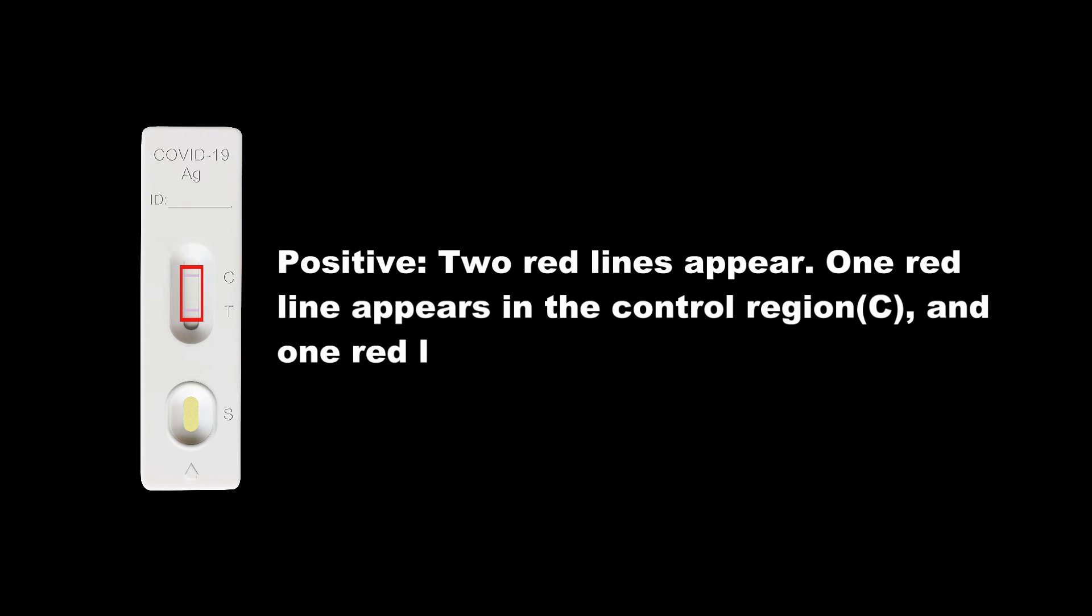Positive: Two red lines appear. One red line appears in the control region C and another red line in the test region T.